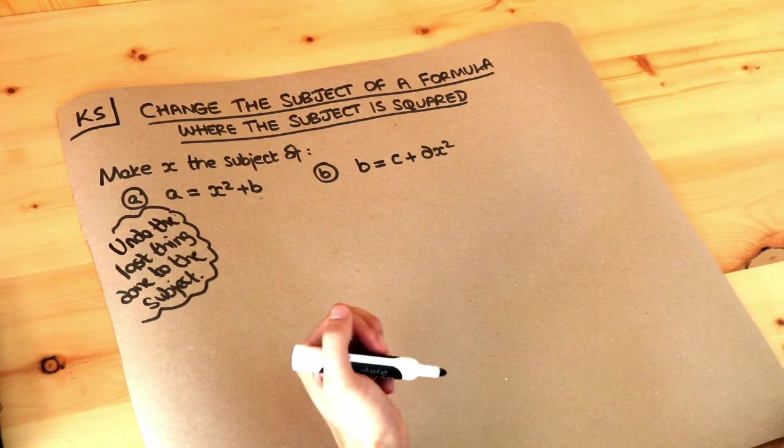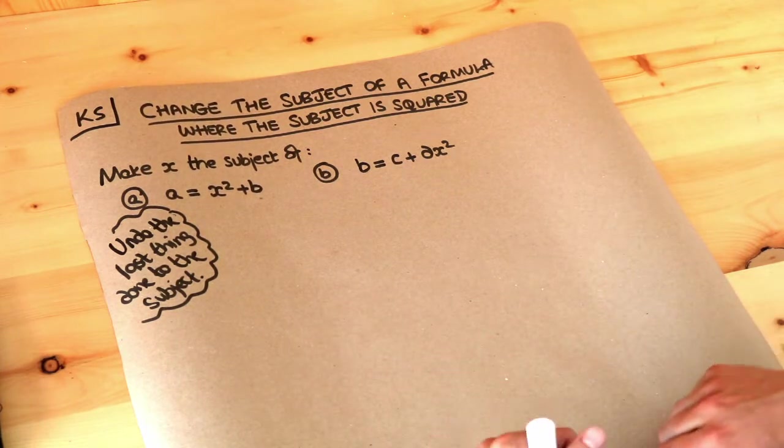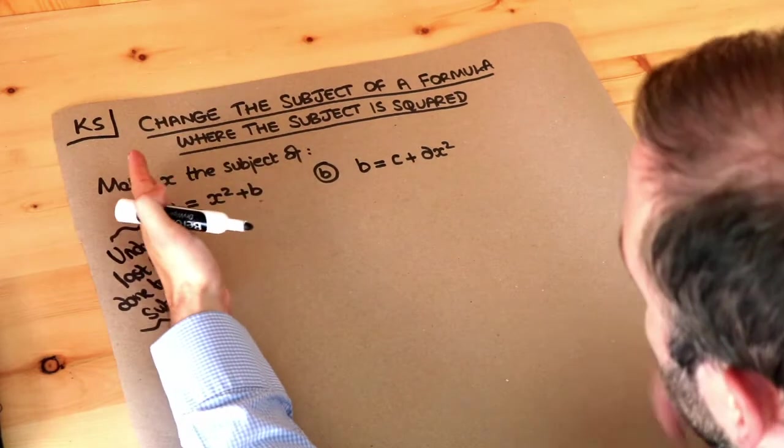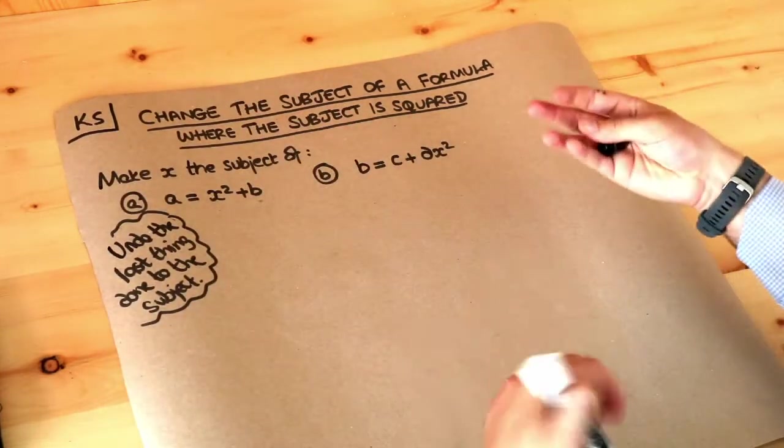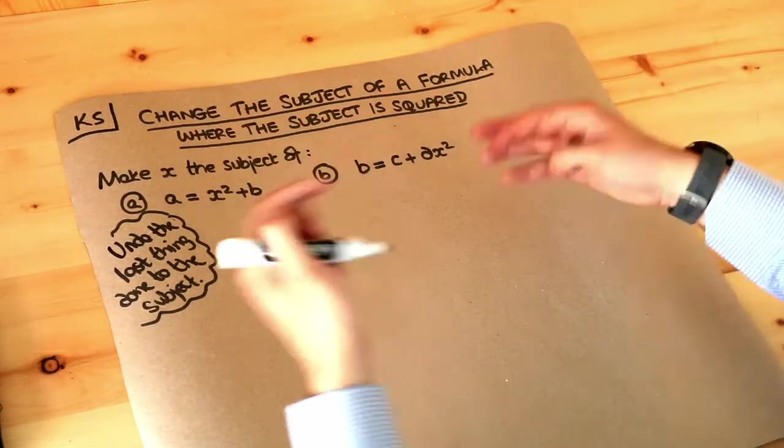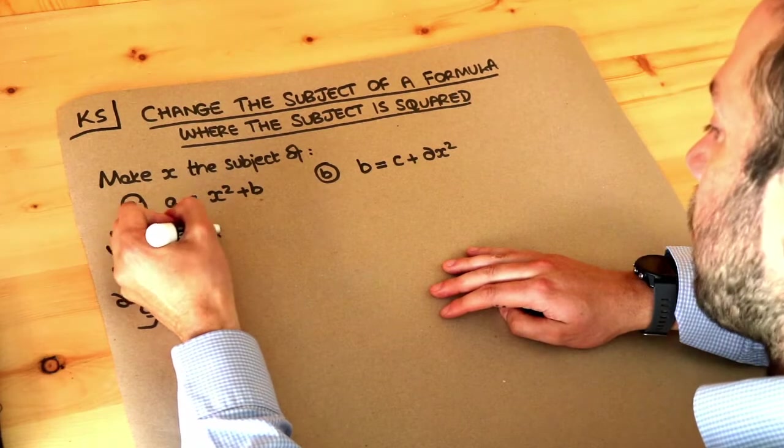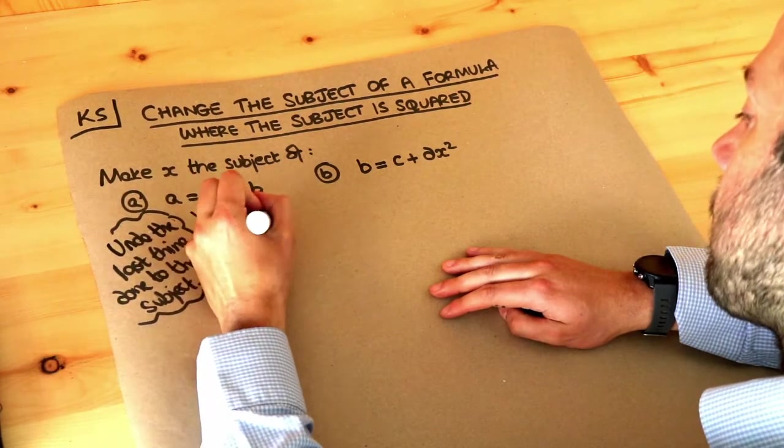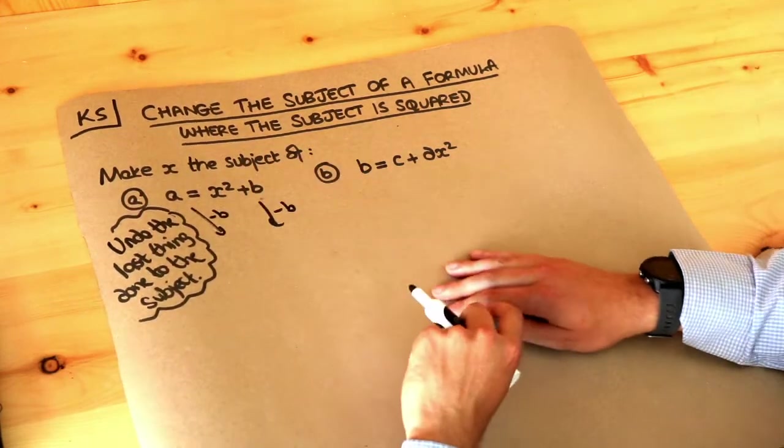So we want to undo that by doing the opposite. The opposite of adding b is subtracting b, and we do that to both sides of the equation because what you do to one side you have to do to the other to keep it balanced. So we're going to minus b from both sides, undoing the last thing we did.